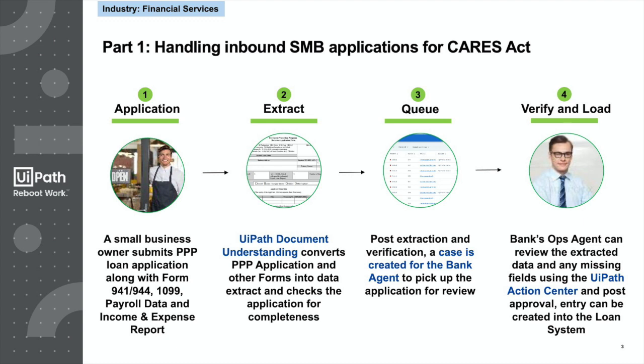Now let us take a look at each step in detail and how UiPath hyperautomation components come into play. It starts with scan copies of the PPP form, IRS, and ADP reports. The document understanding solution will extract the required fields from these forms, and then a case is created for a bank agent to review the data. Finally, the bank user can log into UiPath Action Center to complete the document verification step.